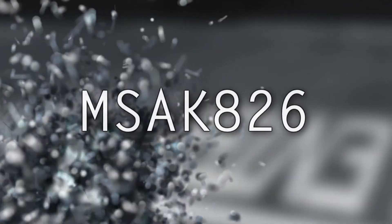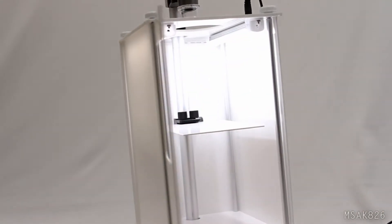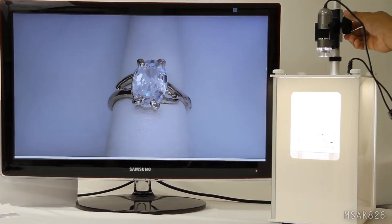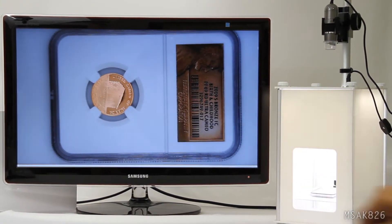Introducing the MS-AK826 photo light box designed for Dynolite microscope cameras. This photo light box is designed to help photograph in a controlled environment for premium image capture, especially for reflective surfaces including numismatics and jewelry.